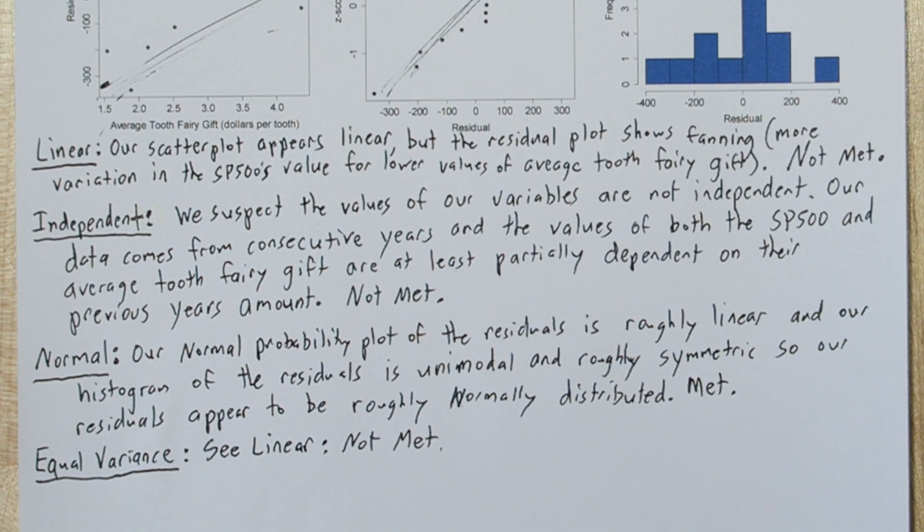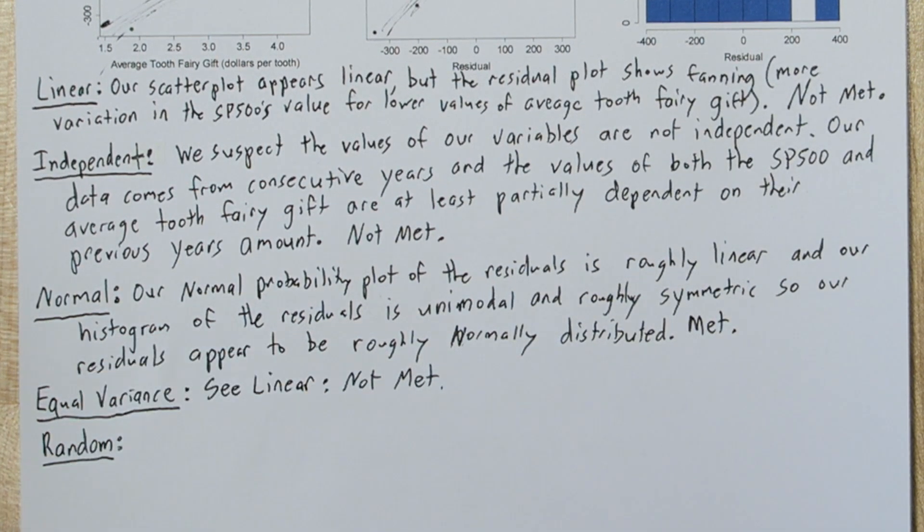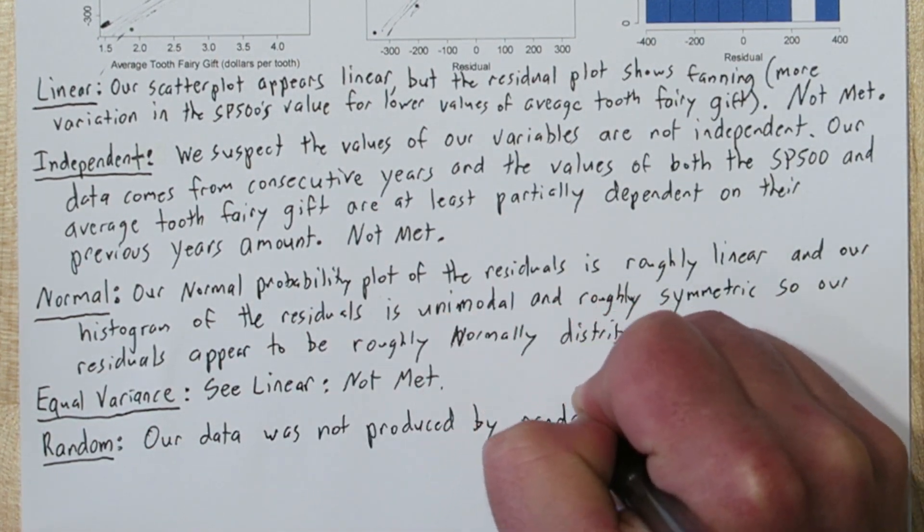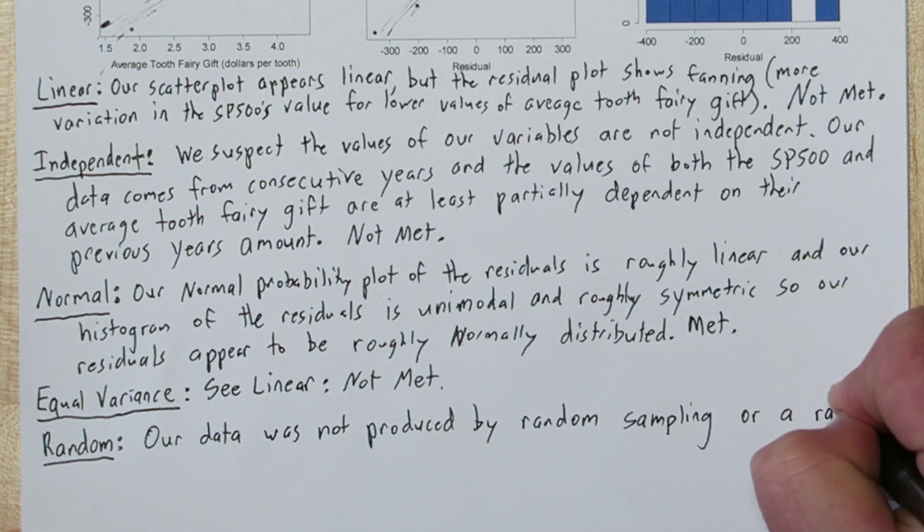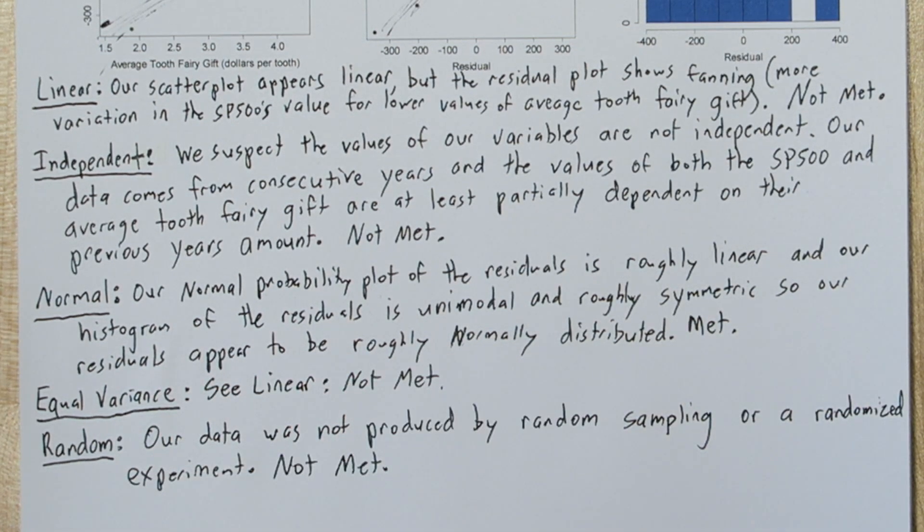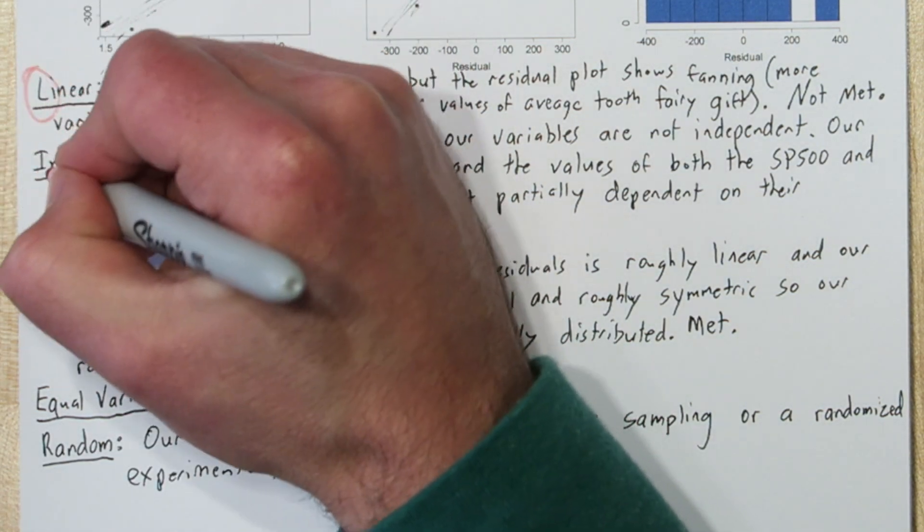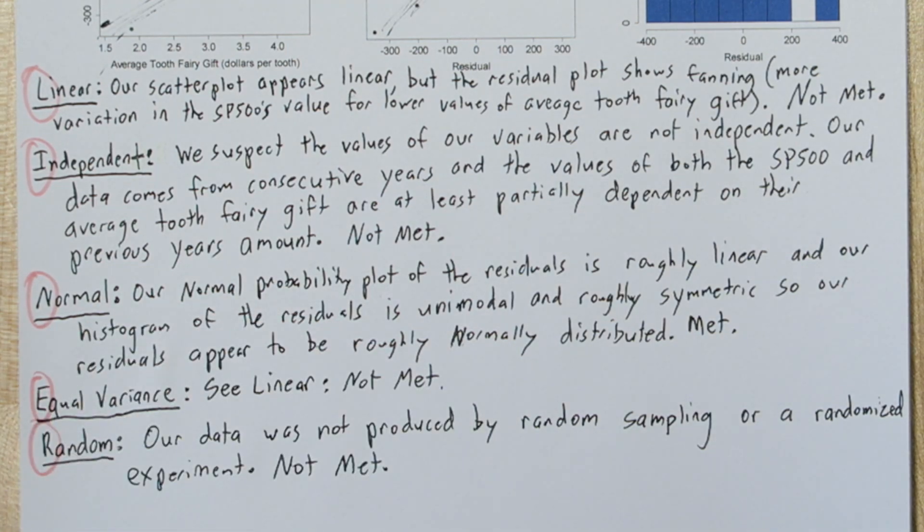Our last condition is the random condition. Our data was not produced by a random sample or by a randomized experiment, so this condition is not met. Now a helpful way to remember these conditions is to remember the acronym LINER. That's L-I-N-E-R.